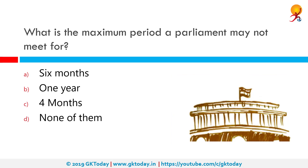What is the maximum period for which a parliament may not meet? The correct answer is 6 months. A session of the Indian Parliament is a time period during which the house meets, and the time between each session is called a recess. The maximum gap between two sessions of Parliament cannot be more than 6 months.